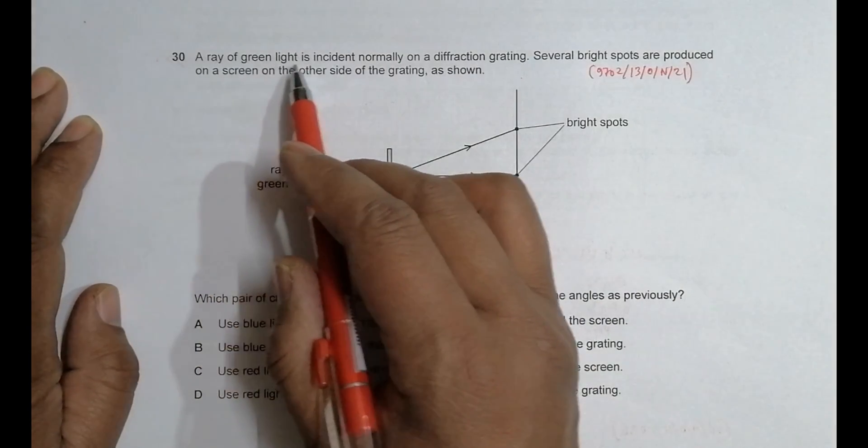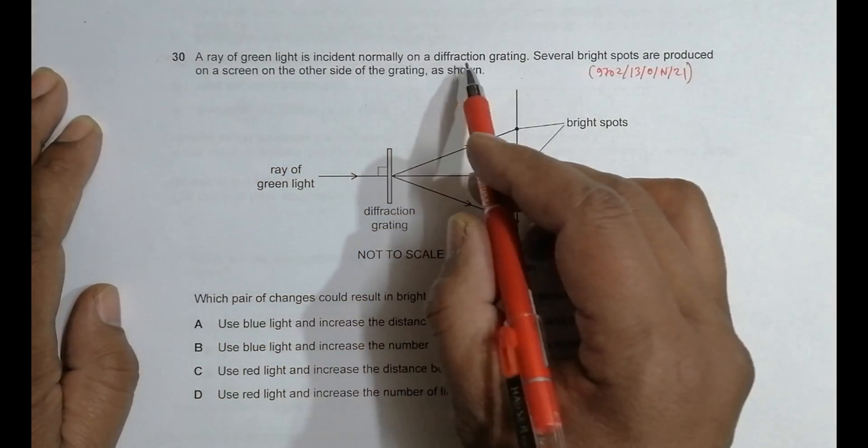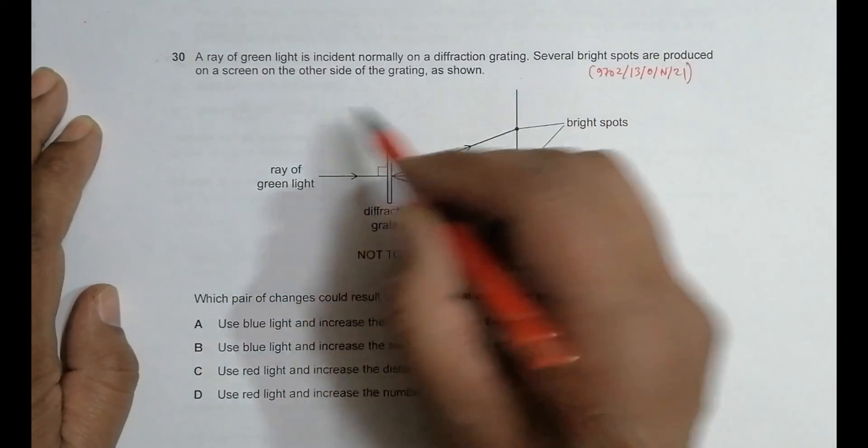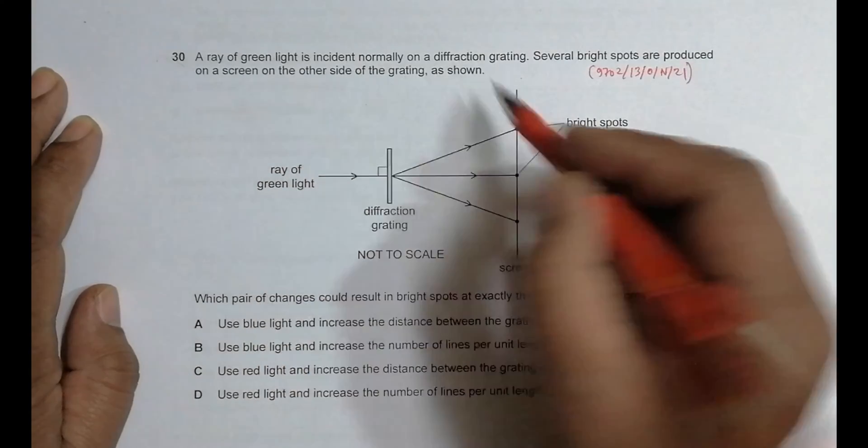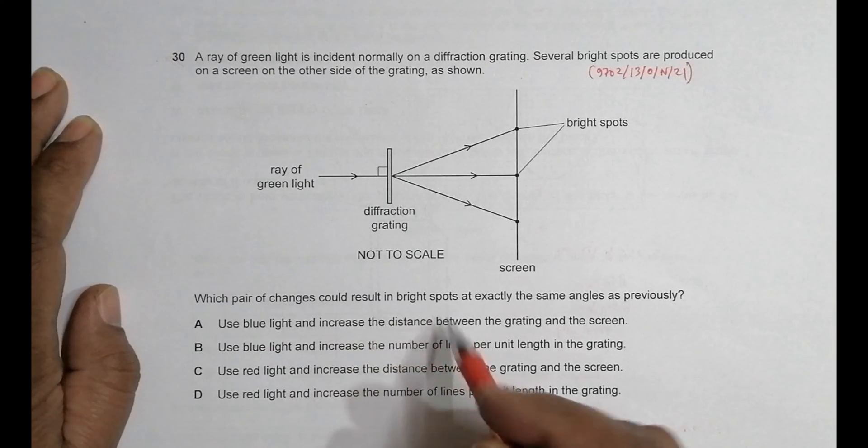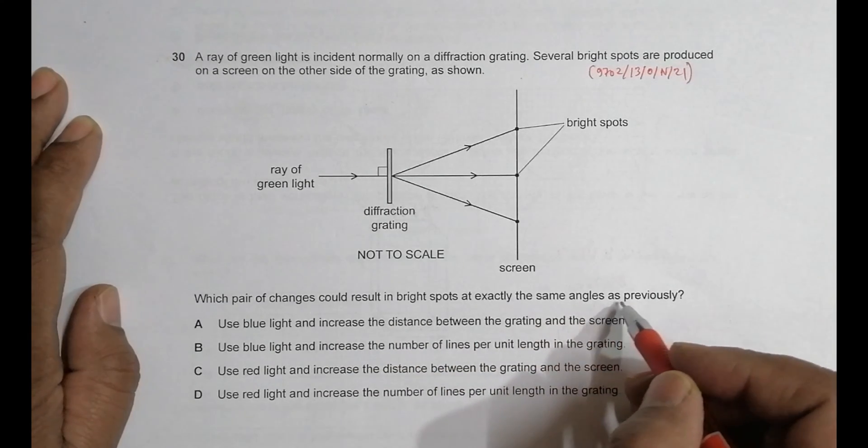A ray of green light is incident normally on a diffraction grating. Several bright spots are produced on a screen on the other side of the grating as shown.